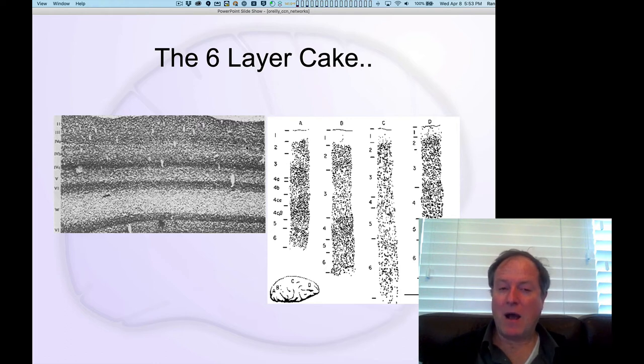One of the most interesting things about these different layers is that they are differentially organized in different parts of the neocortex. And so this diagram on the right shows you A, B, C, D, four different areas in different areas of the cortex, each of which is kind of a prototype for a different type of cortical function. So A, it turns out, is primary visual cortex. So this is where all the visual information is coming in from your retina. And you could imagine that there's going to be some kind of anatomical specialization for that area relative to other areas.